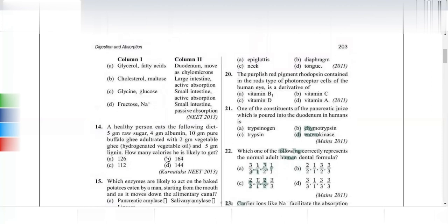The purplish-red pigment rhodopsin is in the rod-type photoreceptor cells of the human eye. The primary vitamin essential for eyesight is vitamin A — retinol. Retinol cannot be synthesized by mammals and must be provided through diet. Vitamin deficiencies including hypervitaminosis are important topics in digestion and absorption.